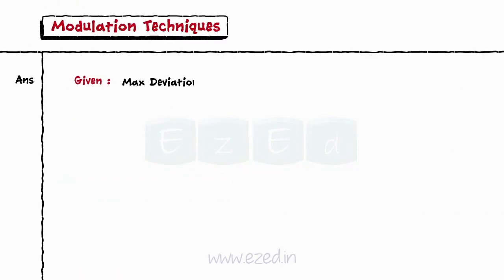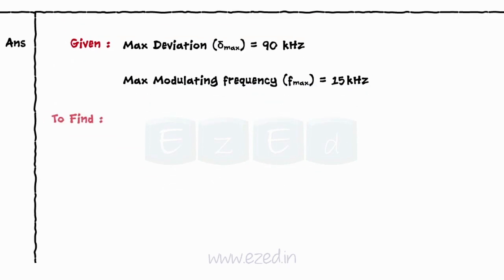We have maximum deviation equal to 90 kHz and maximum modulation frequency equals 15 kHz. We need to find the deviation ratio and system bandwidth.